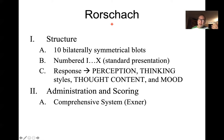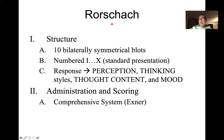After Rorschach developed his test, there were about three or four different individuals who came up with three or four different administration and scoring procedures. So there were three or four different ways of giving and scoring the Rorschach that were probably most popular. But that contributed to problems, because psychologists were doing this in three or four different ways. It wasn't until about the fifties or sixties where Exner developed and integrated all those approaches into his comprehensive system for administering and scoring the Rorschach test.